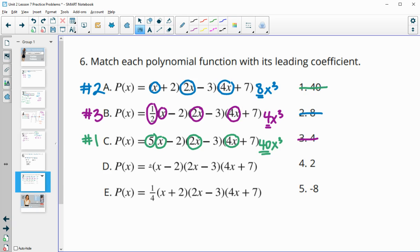For D, we have negative 1 times x is negative 1x, times 2 is negative 2x squared, times 4x is negative 8x cubed. Lead coefficient is the negative 8. That's number 5. That would leave number 4 left for E. It's going to be 1 fourth times 2 is 1 half, times 4 is 2. So we get that 2.